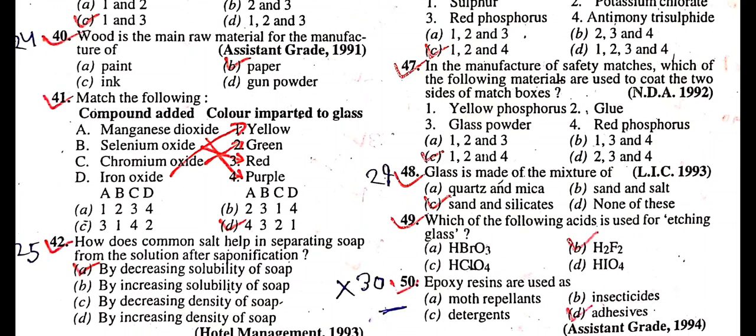Question: Wood is the main raw material for the manufacture of? Answer is paper.